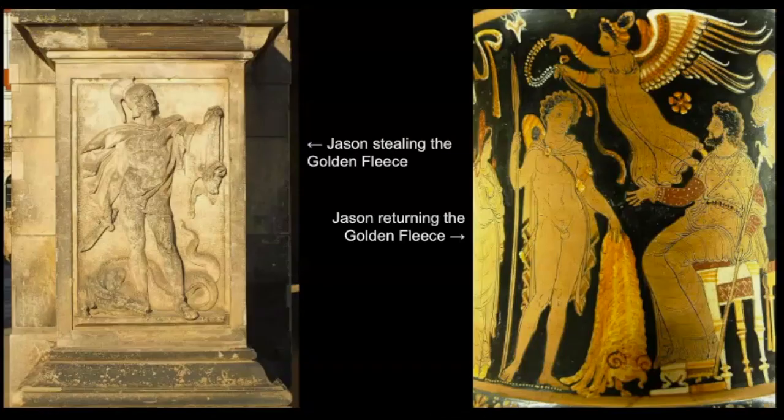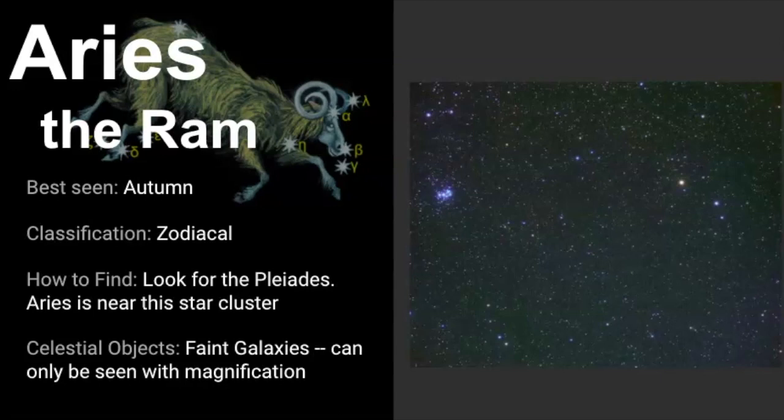We've come to the end of our video about Aries so let's review everything we've learned so far. It's best seen in autumn months in the northern hemisphere and can even be seen into the early winter months. It's classified as a zodiacal constellation because the sun, moon and planets pass through this star pattern. The best way to find it is to look for the Pleiades star cluster. Aries is really close to this particular star cluster so that's what I use to help me find it. In terms of celestial objects there are some faint galaxies that exist within the boundaries but they only really can be seen with magnification.